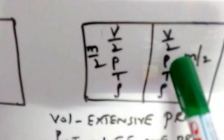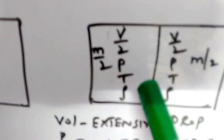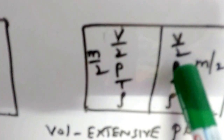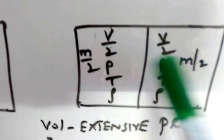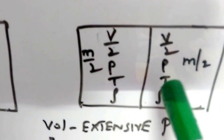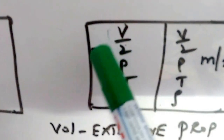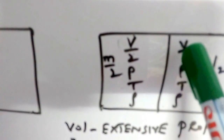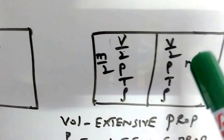Even though the mass changed, the pressure of the thermodynamic system remains constant, and the temperature and density also remain constant even as mass changes. We can directly conclude that pressure, temperature, and density are independent of mass — so they are intensive properties. Since volume changes when mass changes, volume is an extensive property. This simple example helps avoid confusion between intensive and extensive properties.